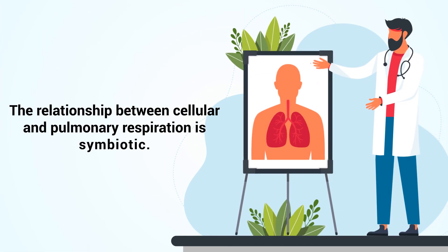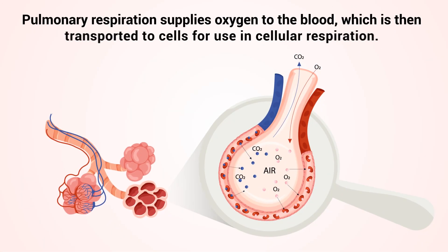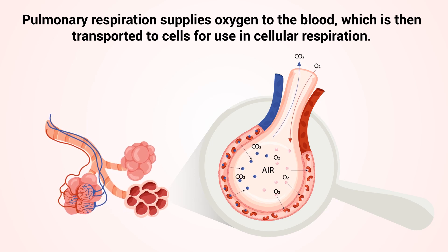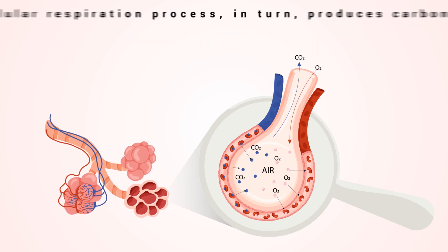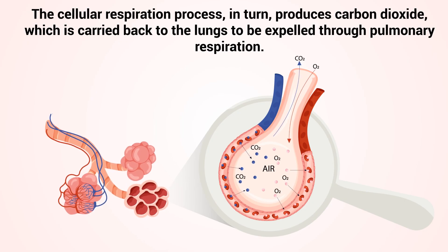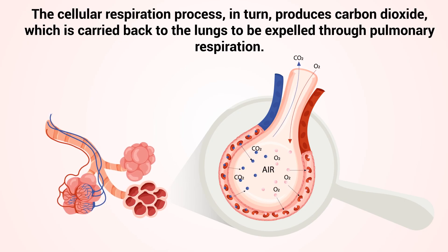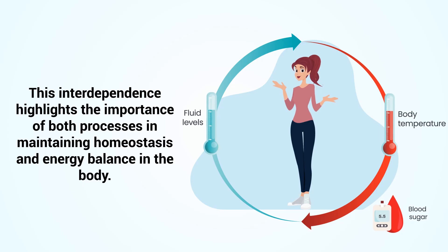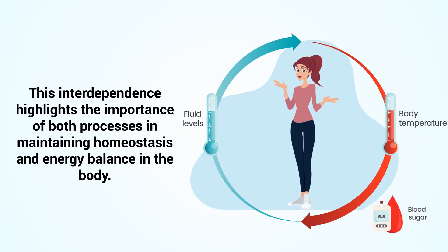The relationship between cellular and pulmonary respiration is symbiotic. Pulmonary respiration supplies oxygen to the blood, which is then transported to cells for use in cellular respiration. The cellular respiration process, in turn, produces carbon dioxide, which is carried back to the lungs to be expelled through pulmonary respiration. This interdependence highlights the importance of both processes in maintaining homeostasis and energy balance in the body.